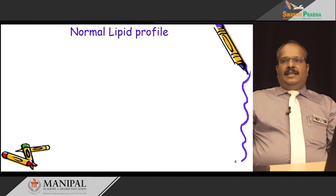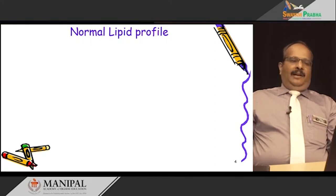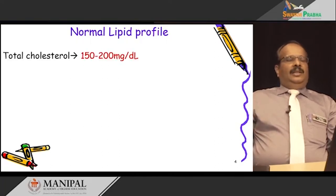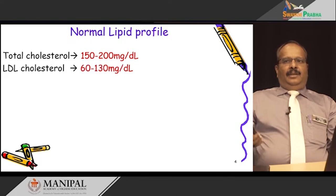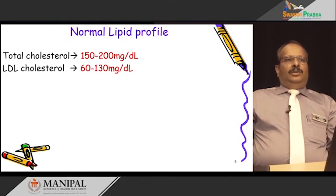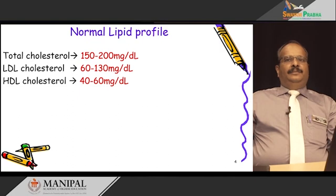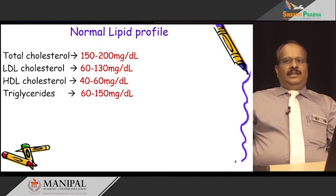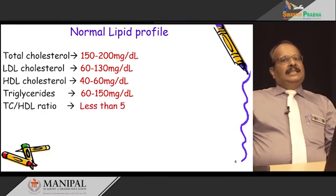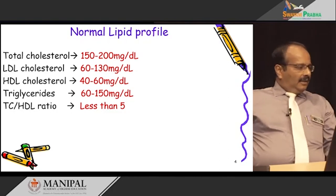Before discussing the disorders of lipoprotein metabolism, we should know the normal lipid profile. The total cholesterol is 150 to 200 mg per deciliter. LDL cholesterol should be maintained in the range of 60 to 130 mg per deciliter. HDL cholesterol is 40 to 60 mg per deciliter. Triglyceride level is 60 to 150 mg per deciliter. And the total cholesterol to HDL ratio should be less than 5.